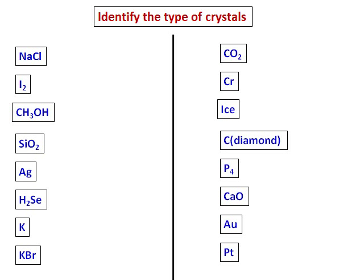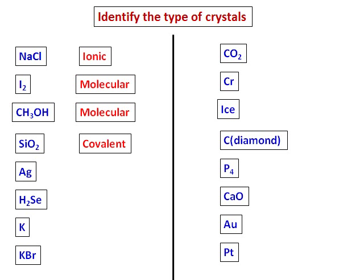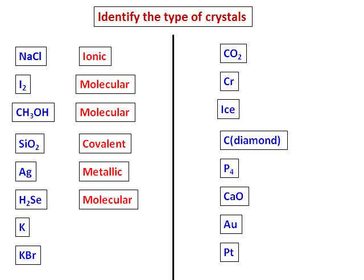Identify the type of crystals: Sodium chloride is an ionic compound, therefore it's an ionic crystal. Iodine is a molecular crystal because it has covalent bonds and is non-polar. Methyl alcohol, CH3OH, is again a molecular crystal. SiO2 will be a covalent crystal because it forms a big network solid. Silver is a metal, therefore it's a metallic crystal. H2Se will be a molecular crystal. Potassium is a metal, therefore it will be a metallic crystal.